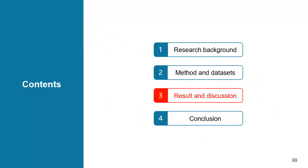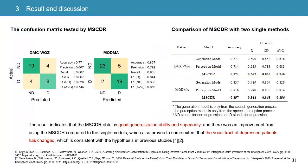Now let us see the results and discussion. The left figure shows the confusion matrix generated on the test sets of DAIC and MODMA. The accuracy of the proposed MSCDR on DAIC-WOZ and MODMA was 0.77 and 0.86 respectively, and the average F1 score was 0.75 and 0.86 respectively.